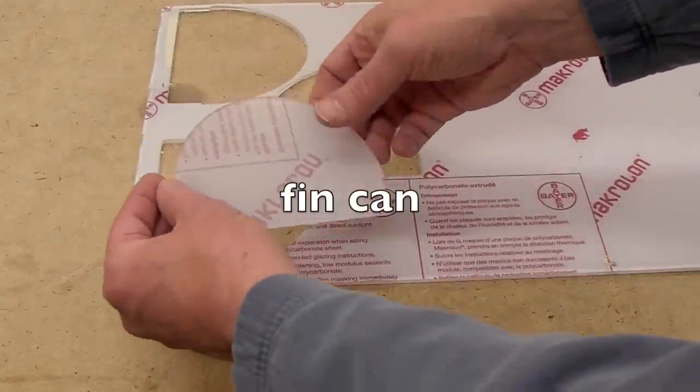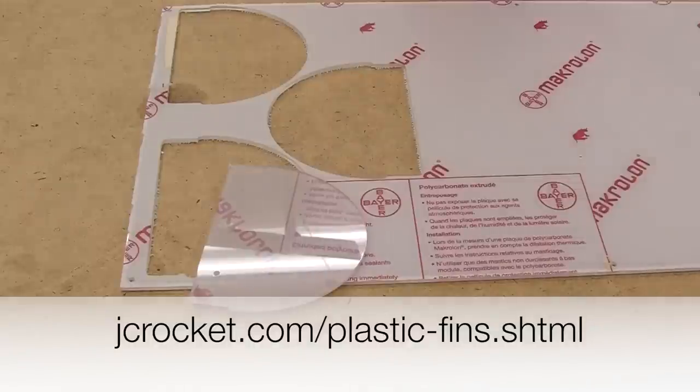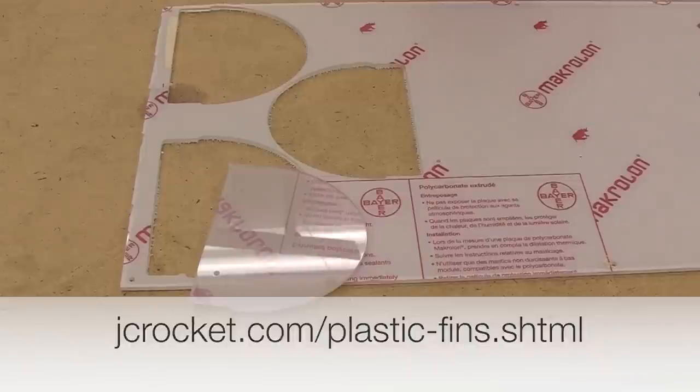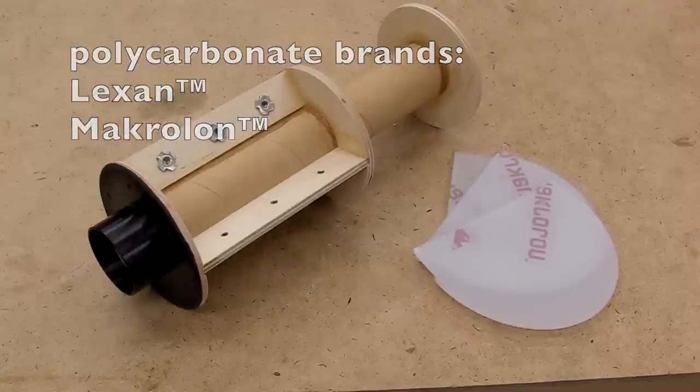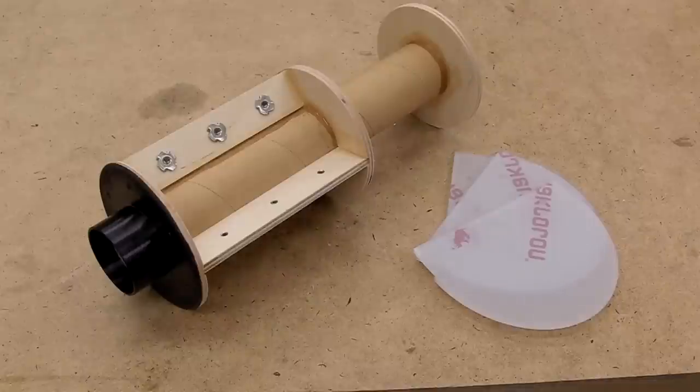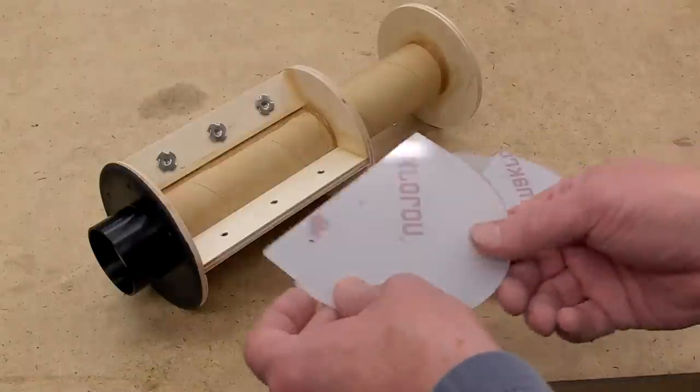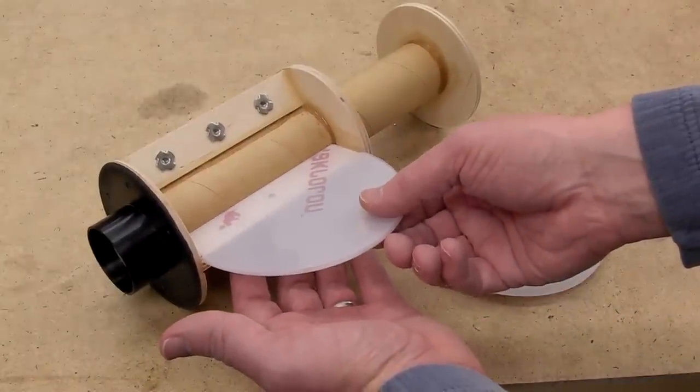I decided to make the fins for this rocket out of plastic so they would be clear and not show up out on the launch pad. If you decide to use plastic fins, make sure you use polycarbonate, not another kind of plastic because polycarbonate is shatter resistant. Another trick when using plastic fins is that you need to provide mechanical bonding of the fins themselves because they won't epoxy well.